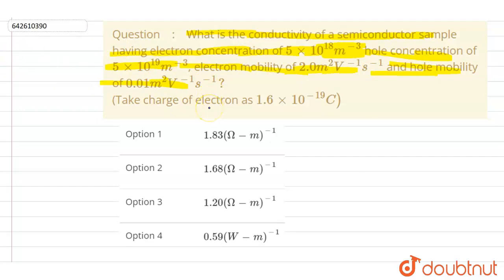If you see the charge on electron, it is 1.6 × 10^-19. So if I write down the conductivity, you see the mobility and concentration is given, so the conductivity will depend on that. I will write down the conductivity is charge on one electron times